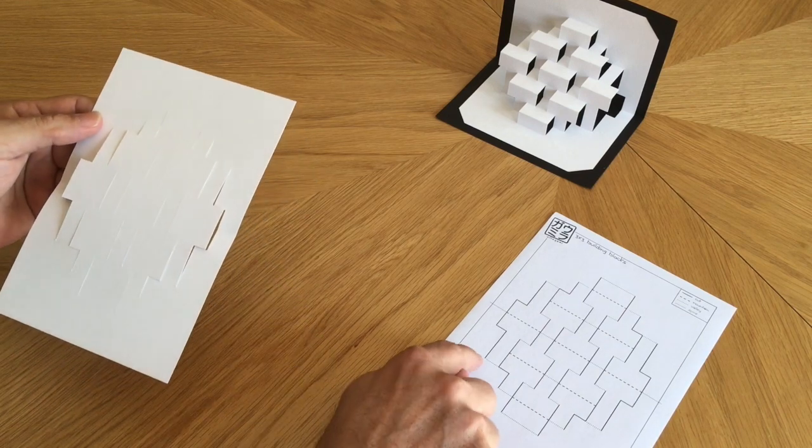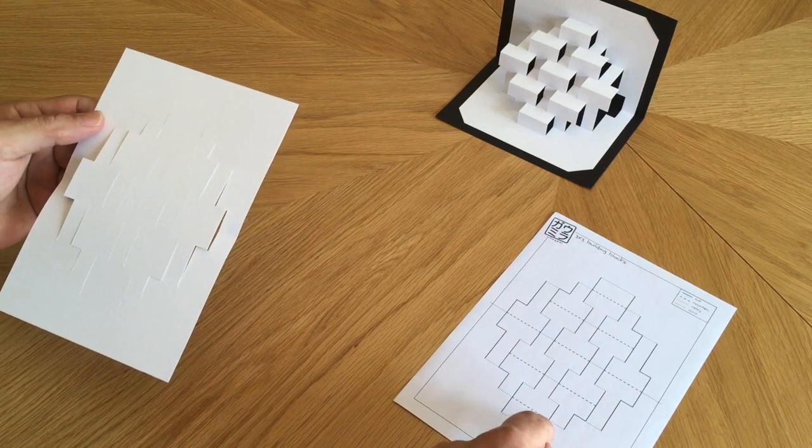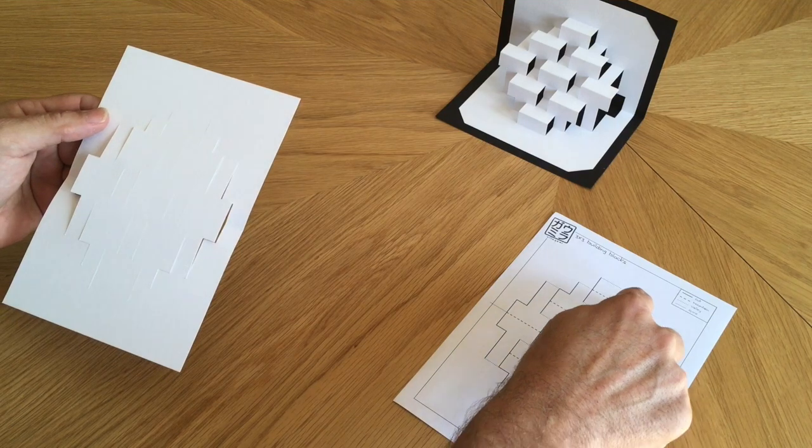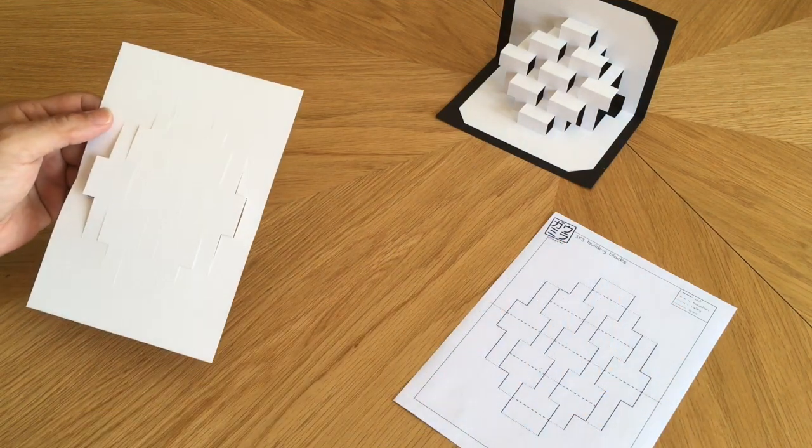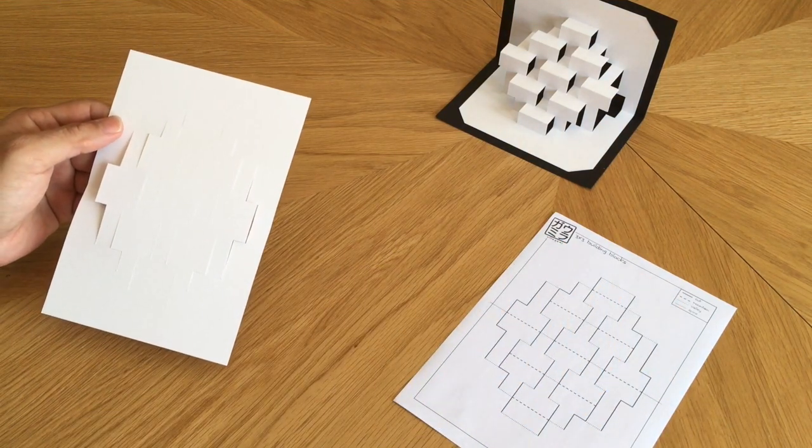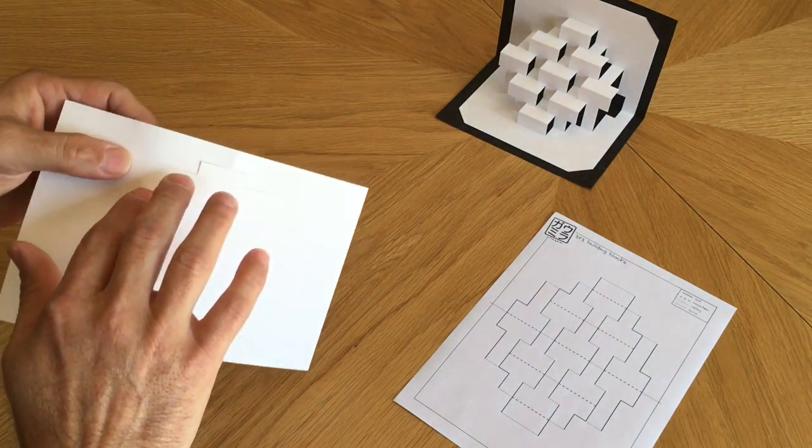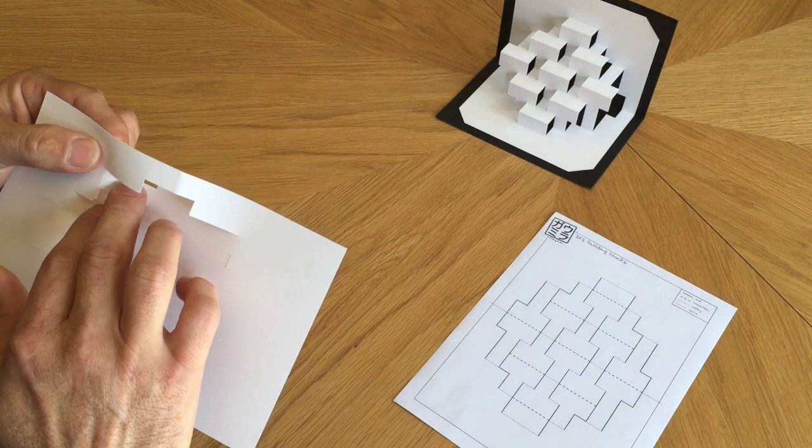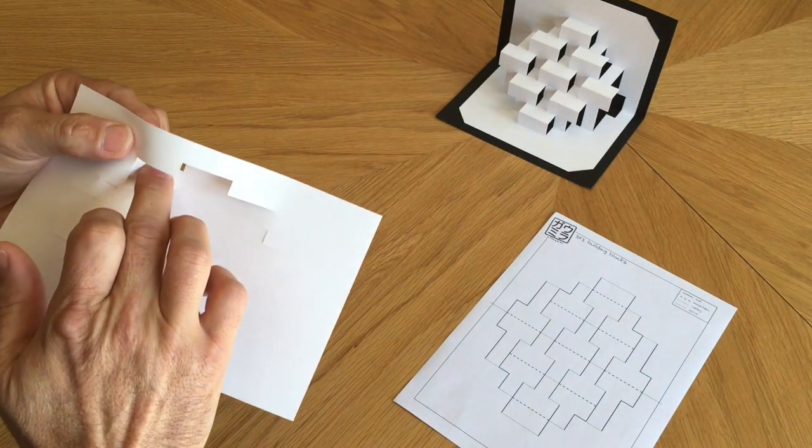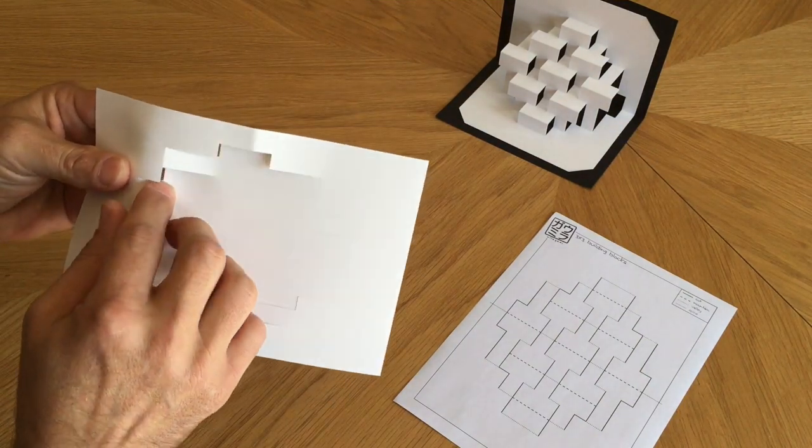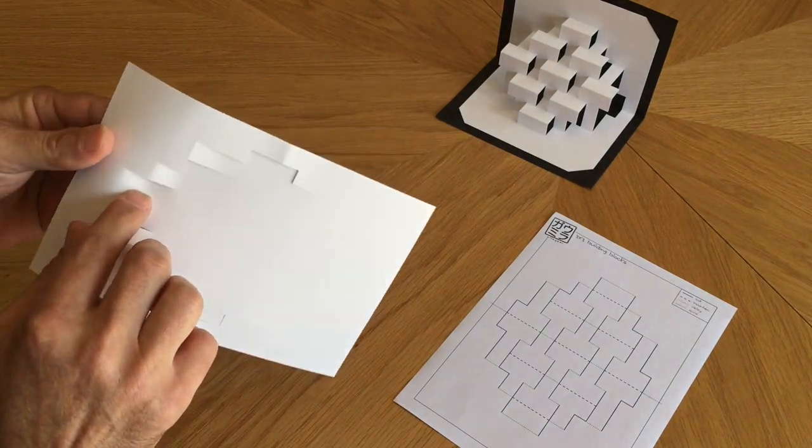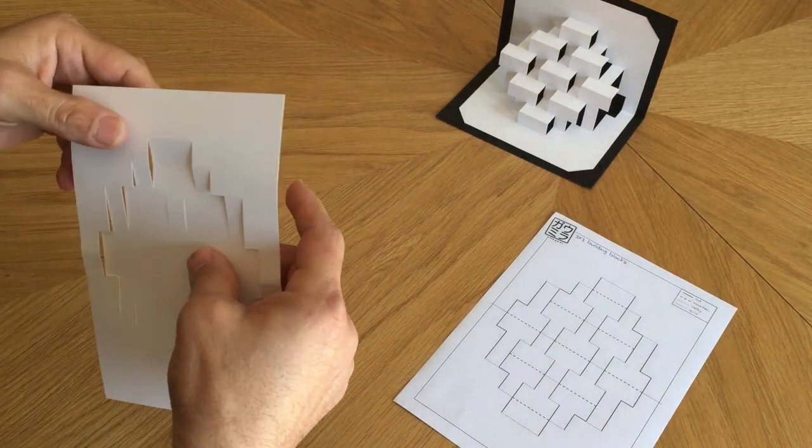Next if you notice on the template all the boundary folds around the outside are valleys because we want our model to pop up and not pop down. So we can turn the model over and from the back go over all those boundary folds one at a time. Valley, valley, valley, all the way around.